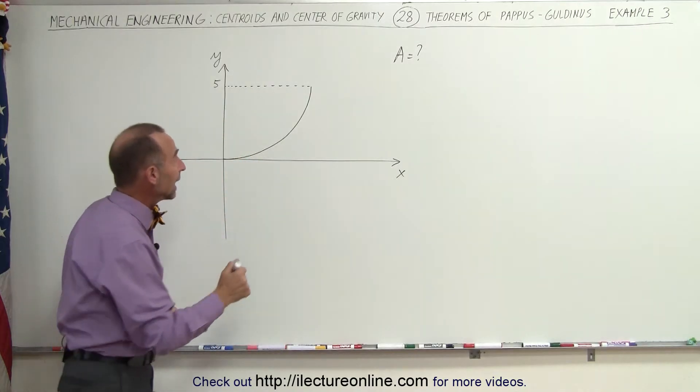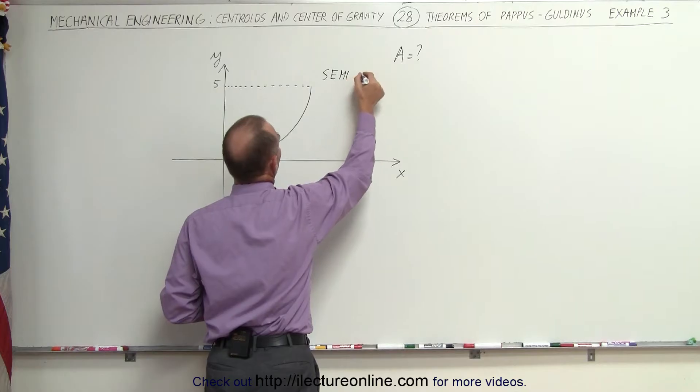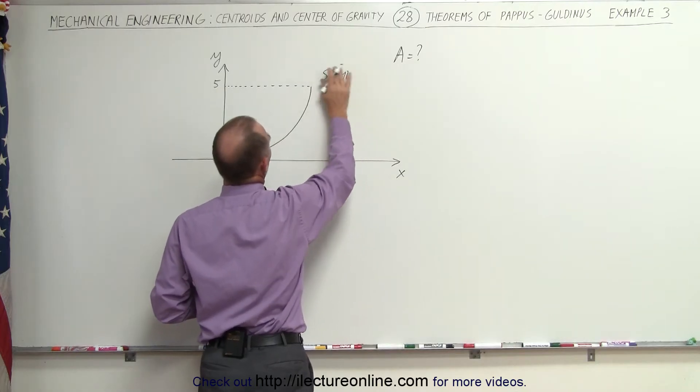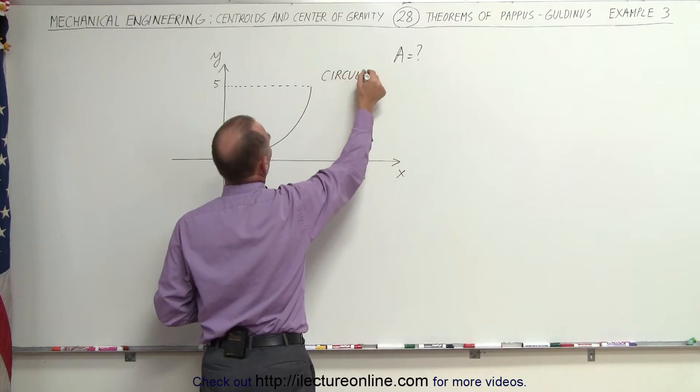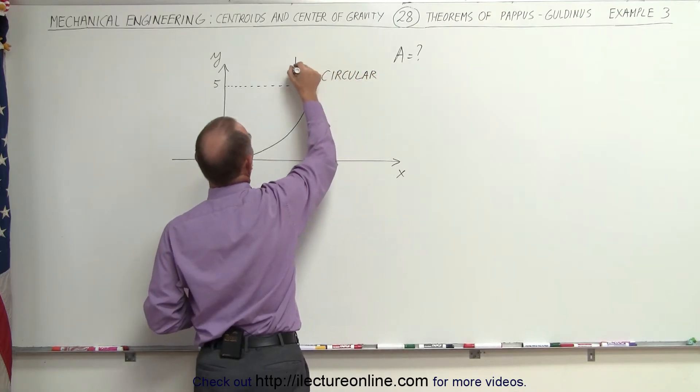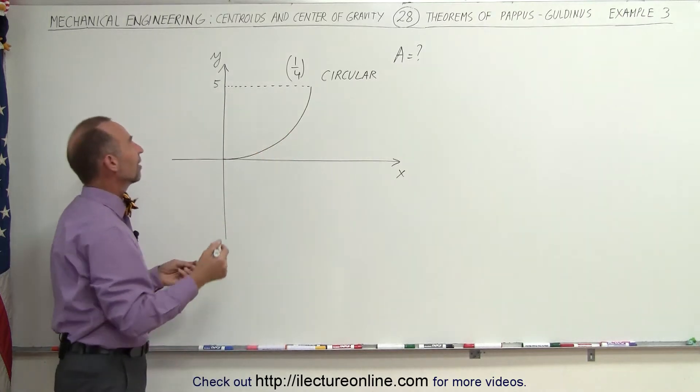Now it turns out this is also a semicircular curve just like the previous example. Or I should say quarter circle, not a semicircle. It's circular in shape but it's only a quarter circle. The radius is five, let's say five centimeters.